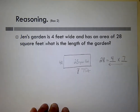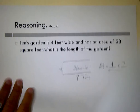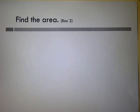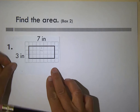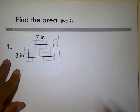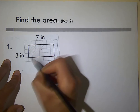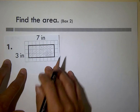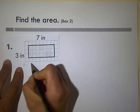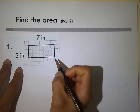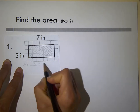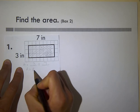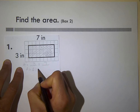The missing side is seven feet. For the following figure, using the formula A equals length times width, I plug in my numbers: three times seven. Area equals 21 square inches.